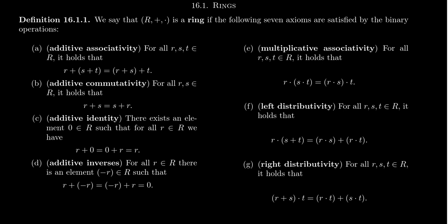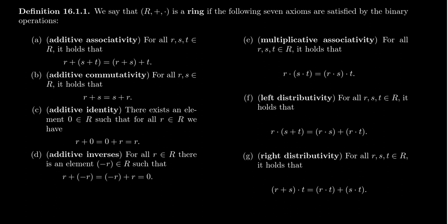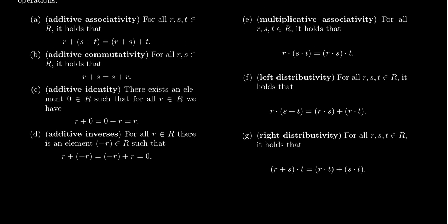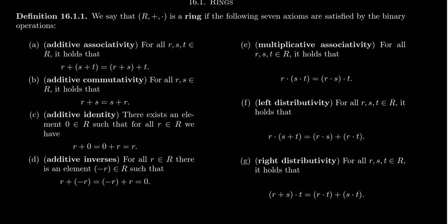We can't just have an abelian group and a semigroup — they have to interact. In rings, that interaction comes from the distributive laws. The left distributive law says R times (S plus T) equals RS plus RT. The right distributive law says (R plus S) times T equals RT plus ST. Since multiplication in a ring is not assumed commutative, we need both left and right distributive laws separately — you cannot prove one from the other without commutativity.